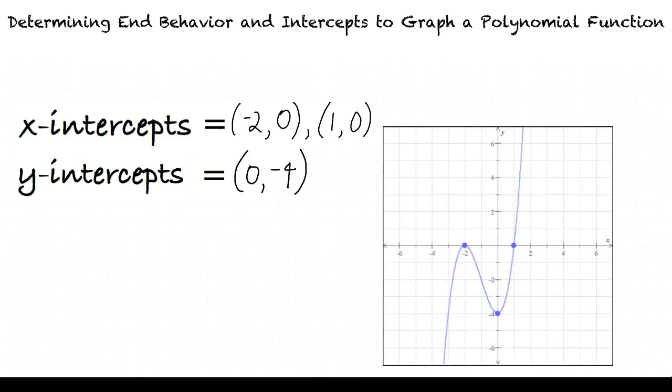I think I understand how to determine the end behavior and intercepts to graph a polynomial function. First, I find the end behavior by calculating the degree of the polynomial and the leading coefficient of the polynomial, then determining whether the graph rises or falls to the left or to the right. Next, I set the polynomial function equal to 0 to find the zeros and substitute 0 for x to find the y-intercepts. Lastly, I plot the points along with their predicted behavior and click the graph icon to draw the function. That's right.